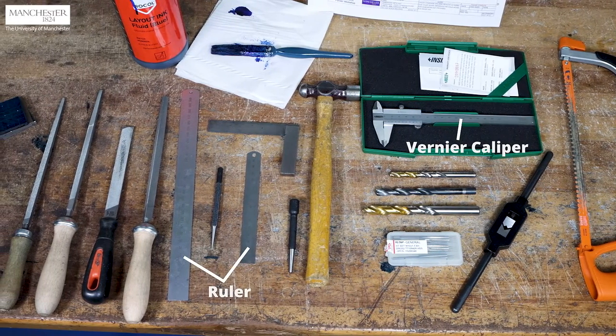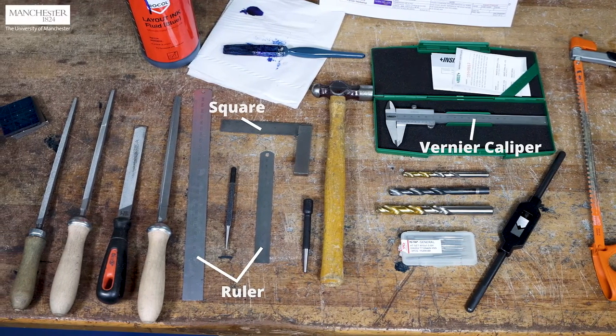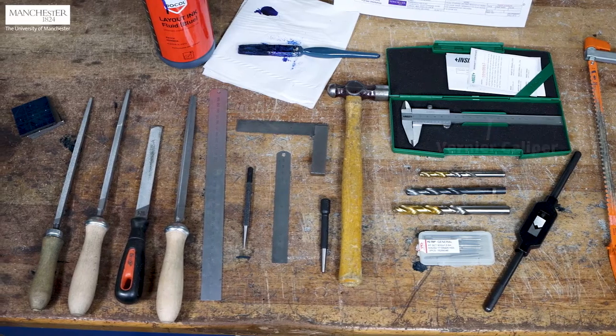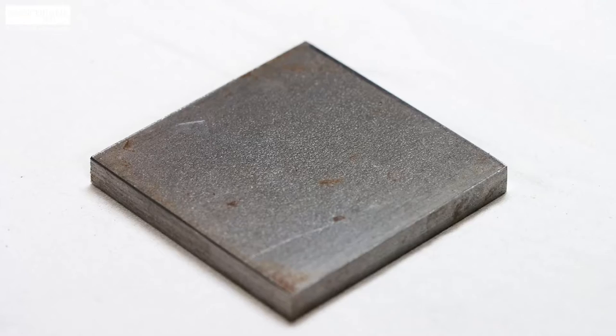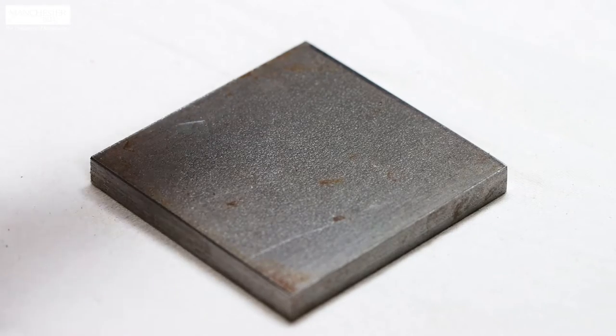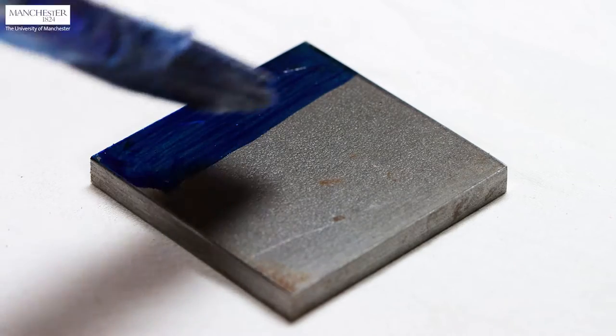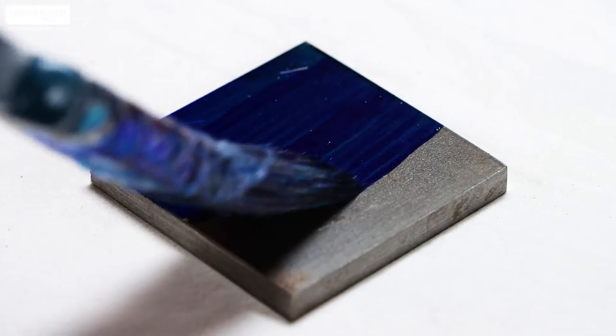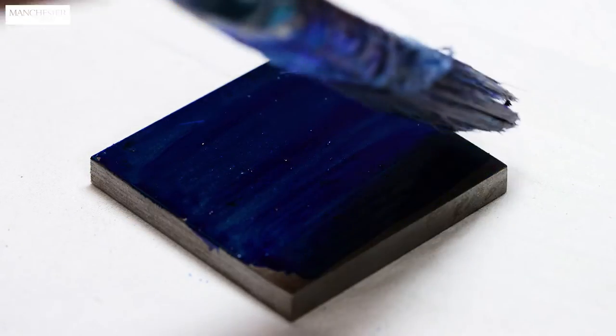The vernier caliper, ruler, and square are for checking the quality of the part as we produce it. For visible marking lines, we paint the part on one side with blue layout ink before the process.